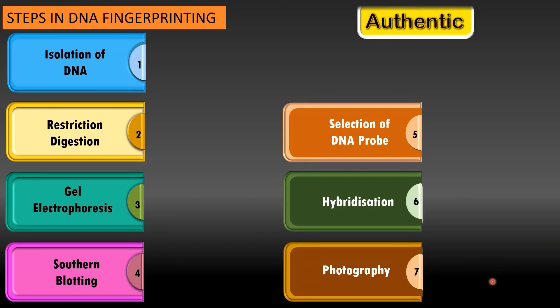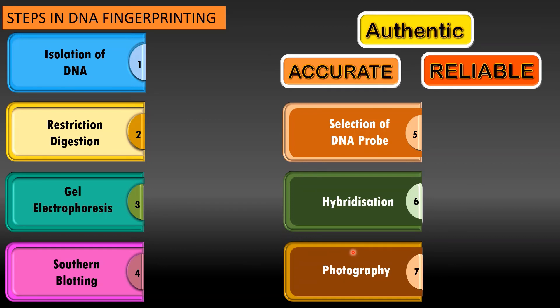So students, these are the seven steps involved in DNA fingerprinting. Now you can derive sample from any one of the places like blood, saliva or anything. But these are the common steps involved in DNA fingerprinting. I hope you are clear with these steps.